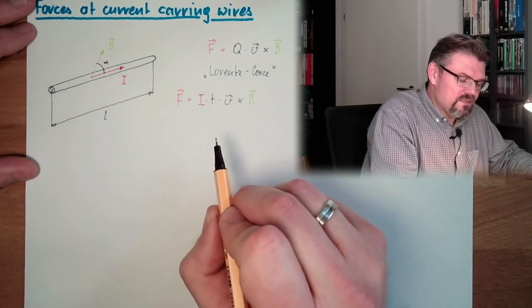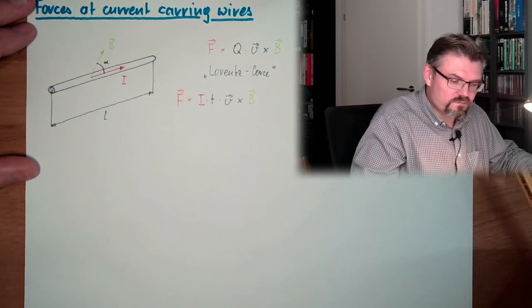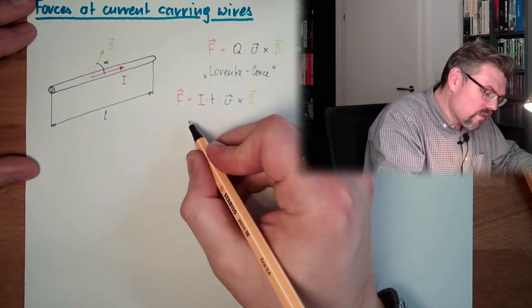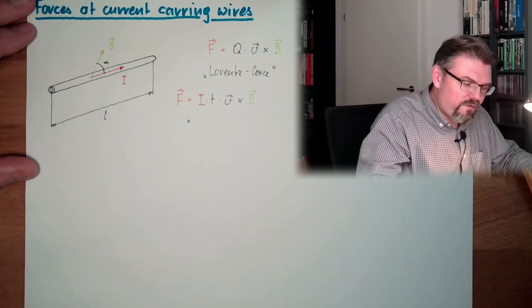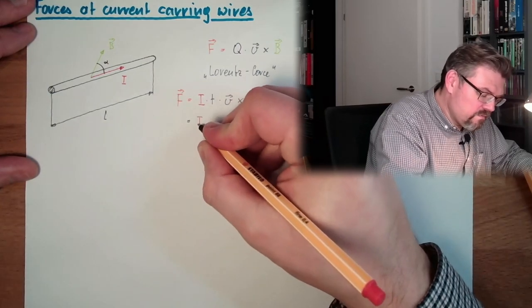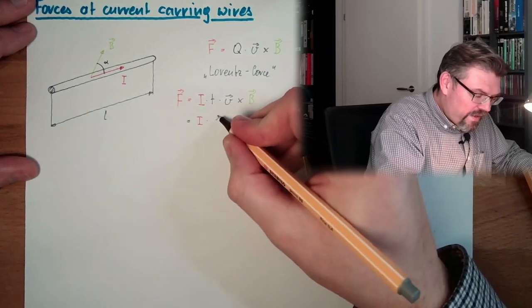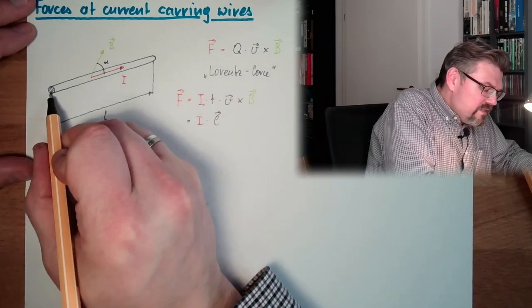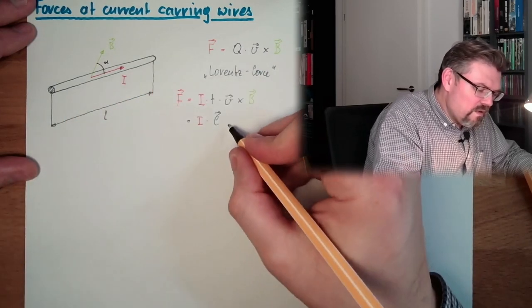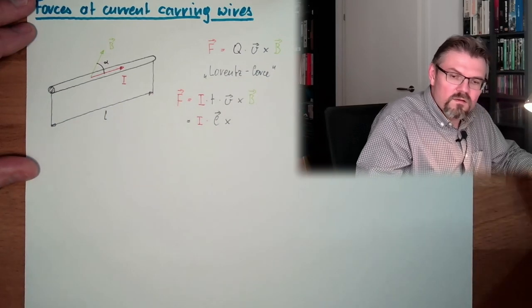So in direction of the current. Because I have still this vector. So we have our current I. Then we multiply. And then we have our length L. In this direction. From here to here. Cross B.